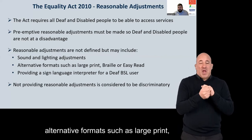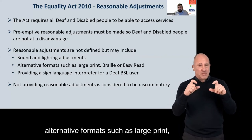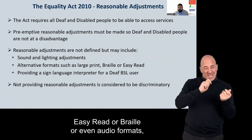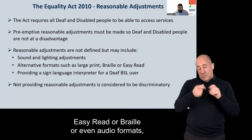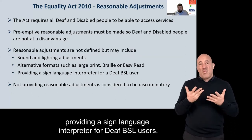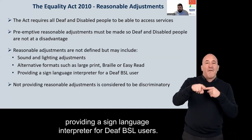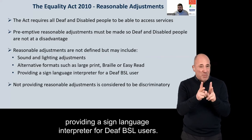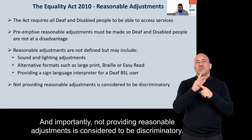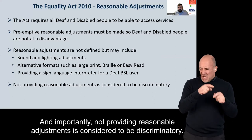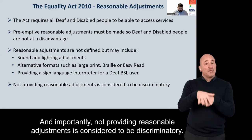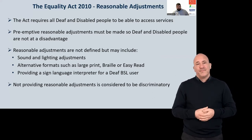Reasonable adjustments may also include alternative formats such as large print, easy read, Braille, or audio formats, and providing a sign language interpreter for deaf BSL users. Importantly, not providing reasonable adjustments is considered to be discriminatory.